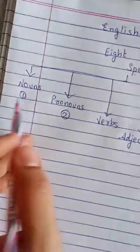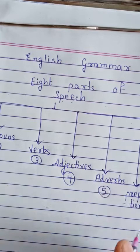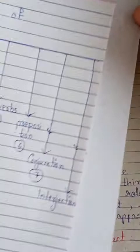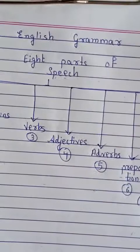The eight parts of speech are: nouns, pronouns, verbs, adjectives, adverbs, preposition, conjunction, and interjection. These are the eight things that you need to be very clear on for any grammar topic.